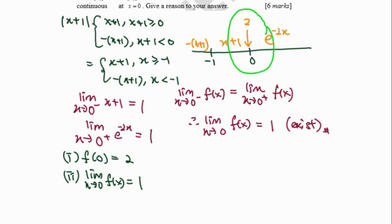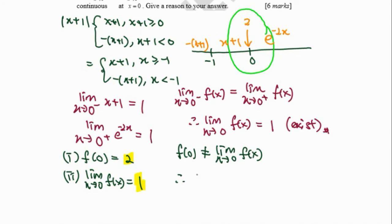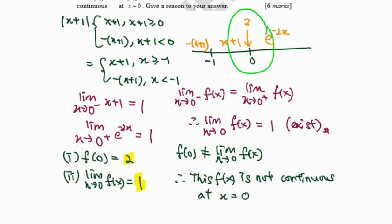For condition 3, f(0) must equal the limit. We see here that they are not the same. This means f(0) does not equal the limit as x approaches 0. Therefore, f(x) is not continuous at x = 0.